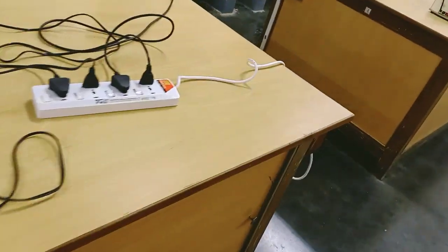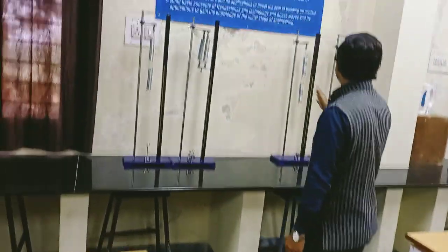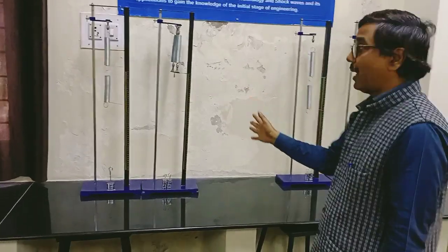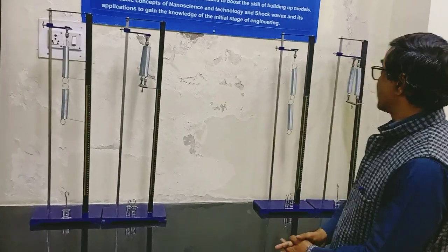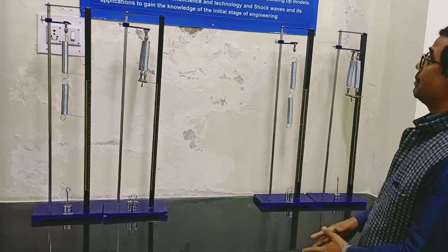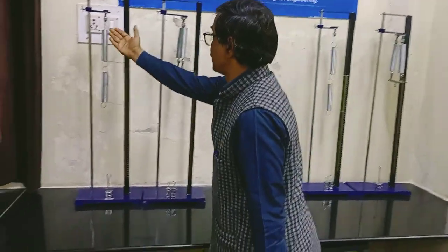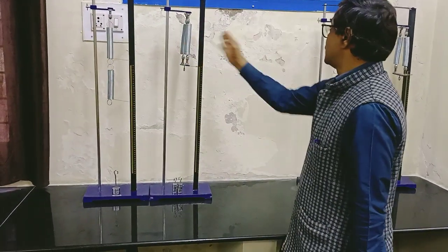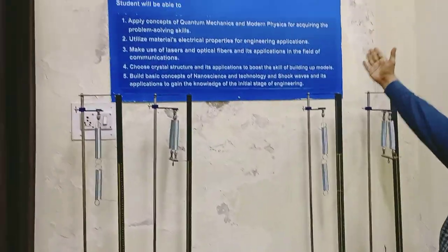Now moving to the next one - here we have the spring experiments, both in series and parallel configurations. You have to find out the spring constant experimentally in series and parallel. As you can see, this is your series combination and this is your parallel combination.